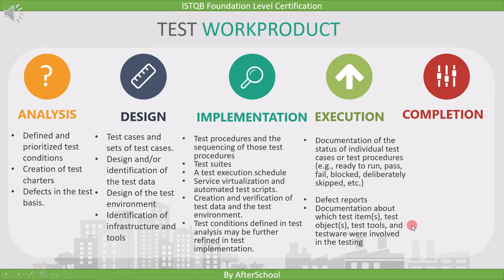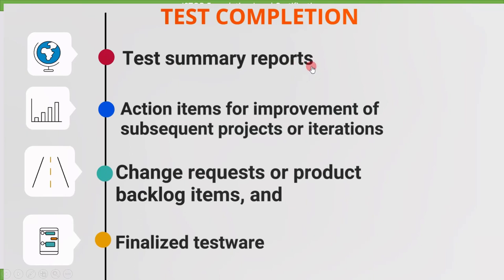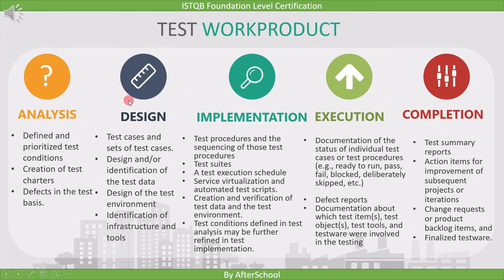Finally, test completion is the activity that comes once all other test activities are completed. Our task here is to collect all reports, such as the test summary report. We also document any improvement points that can be used for the next release. Next, we document any change requests or backlog items — test cases or scripts that were not executed — so they can be addressed in the next release. The last point is finalized testware: everything used during testing and all outputs are stored. Many of these test work products can be captured and managed using test management tools and defect management tools.